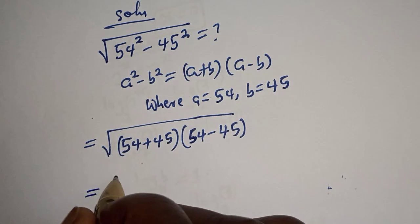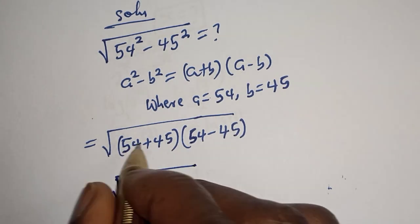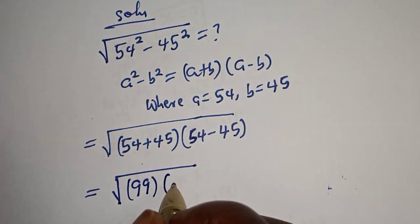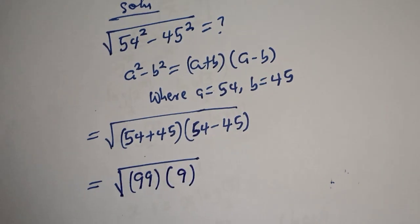Equal to square root of 54 plus 45 is 99, multiplied by 54 minus 45 is 9.